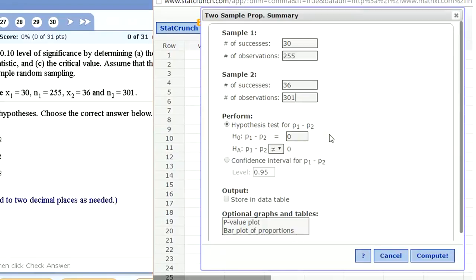Now the hypothesis test, notice the difference of the way it's shown. P1 minus P2 equals 0 is the same as P1 equals P2. So that's what we should pick. And the alternative we pick not equal to, that's what we want. And just click compute and that'll do the hypothesis test.